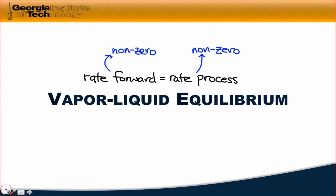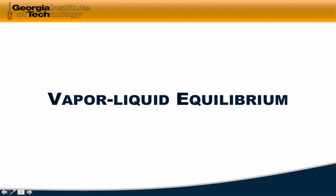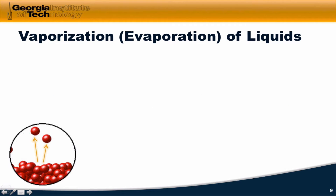For example, when a vapor and a liquid are in equilibrium, condensation and evaporation are always occurring even in an equilibrium state, when the moles of gas and the moles of liquid appear not to be changing. That's an important concept to lay out before we get into the details of vapor-liquid equilibrium.